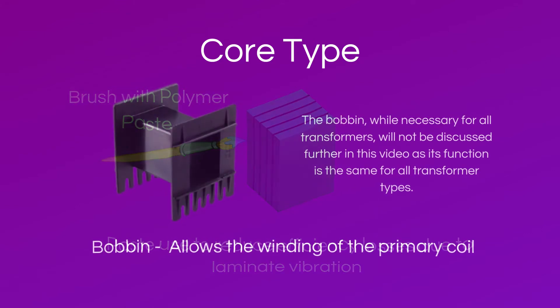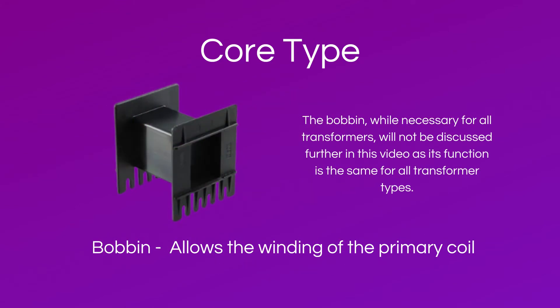The bobbin is placed over the core to allow the winding of the primary coil. This is done to prevent the core from abrading the insulation on the primary coil and to enable faster winding.